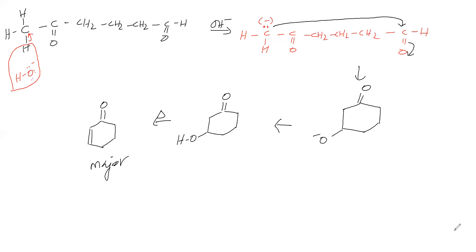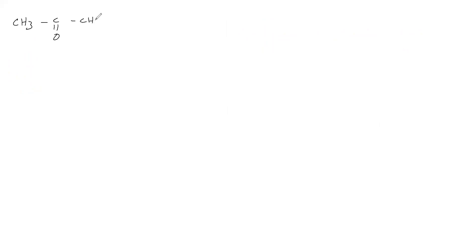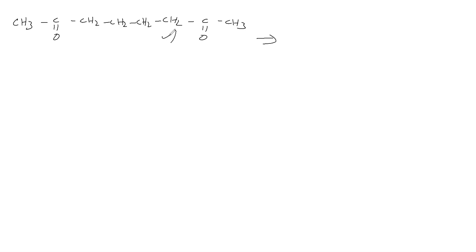Next reaction: CH₃CO(CH₂)₄COCH₃. In this compound, we have to form the carbanion — there is no doubt, we can only do it here because everything is equivalent and we are not getting three-membered or four-membered rings. So remove H⁺ from this carbon, make it a carbanion, and proceed to get the major product.